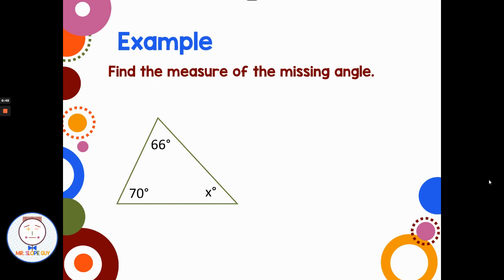So for example, if I have this triangle and I have two interior angles of 70 and 66, and I have an unknown angle at x, I know that the sum of these angles is 180 degrees. So x, the unknown angle, plus 70 plus 66 has to add up to 180 degrees. If I add 70 and 66, I get 136. Subtract that from 180, and my missing angle has to be 44 degrees.